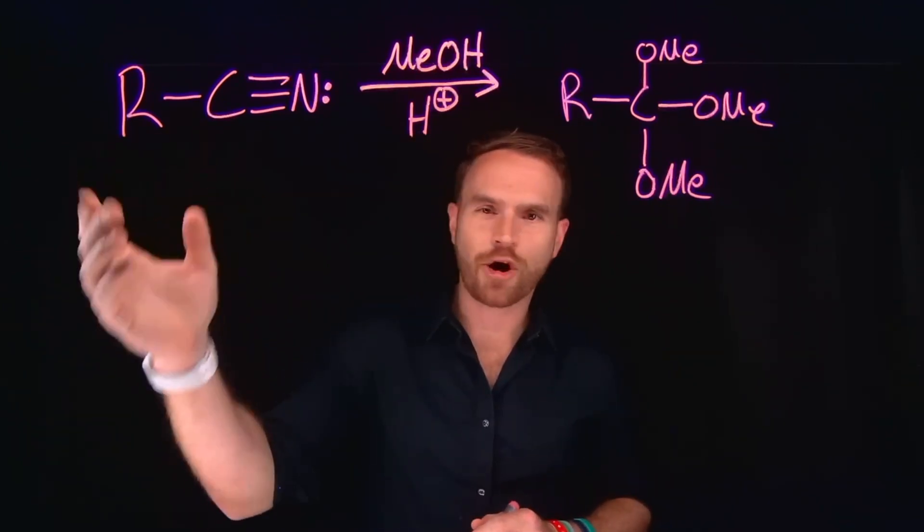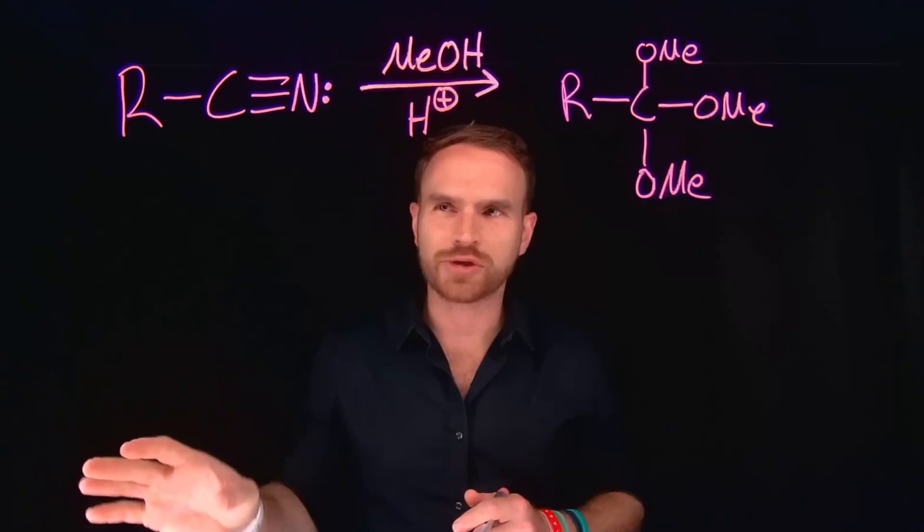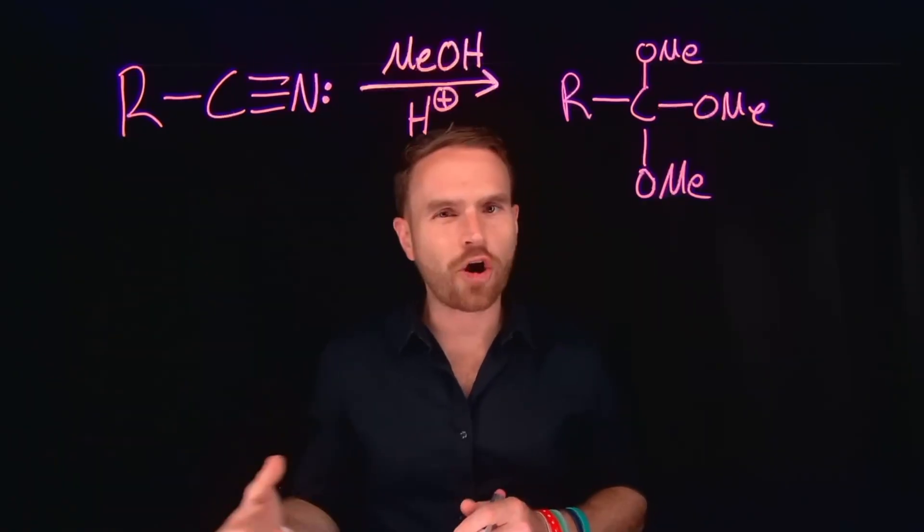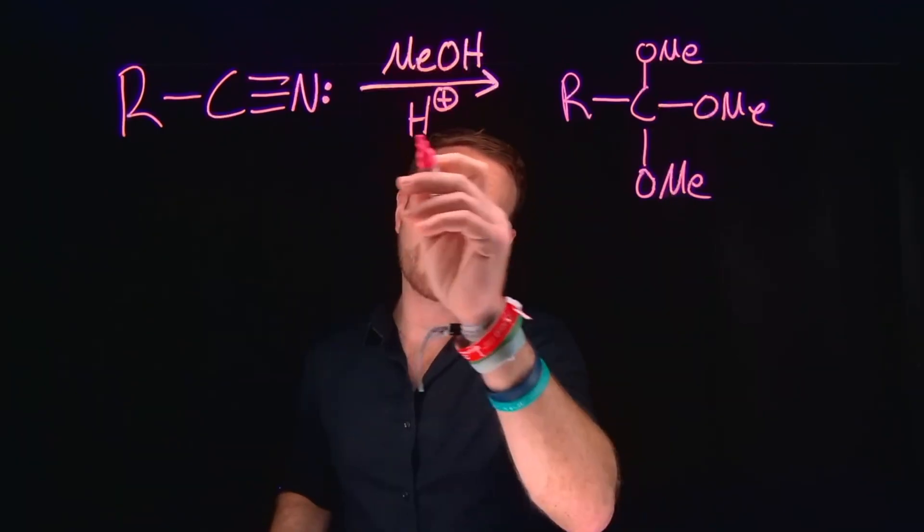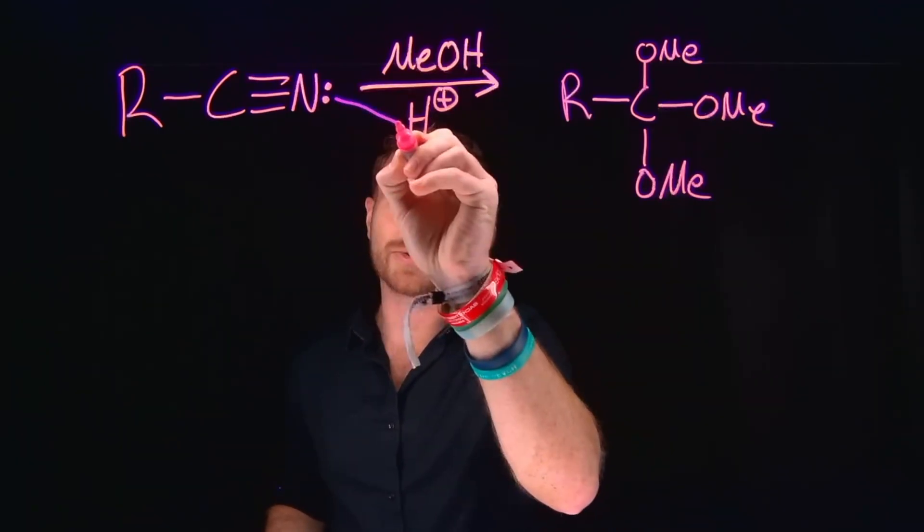In our reaction, you're told that you have some R group, which could just be any sort of alkyl chain, attached to a nitrile, which is a carbon-to-nitrogen triple bond. And this functional group has a lone pair of electrons on the nitrogen, which can be protonated by whatever acid we're using in this reaction.